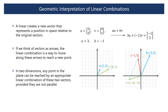Geometrically, a linear combination involves scaling vectors and then adding them together. The result is a new vector that represents a position in space relative to the original vectors. If we think of vectors as arrows, the linear combination is a way to move along these arrows to reach a new point. In two dimensions, if we have two vectors U and V, any point in a plane can be reached by an appropriate linear combination of these two vectors, provided they are not parallel. This concept leads us to the idea of the span.